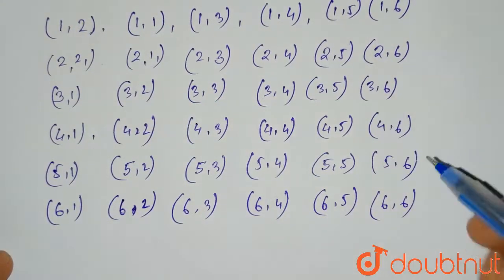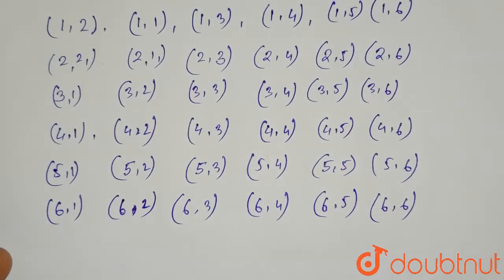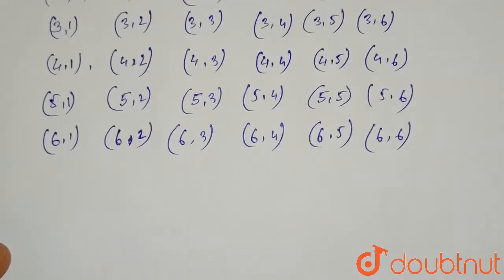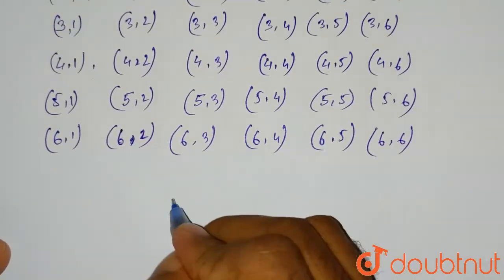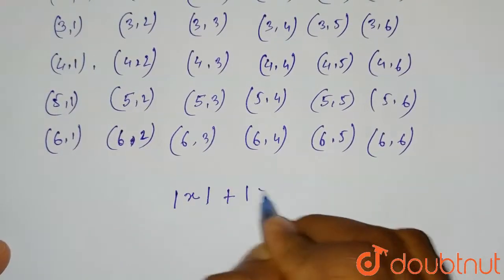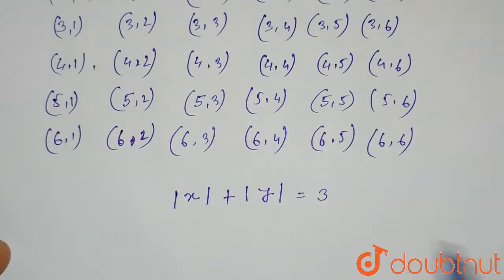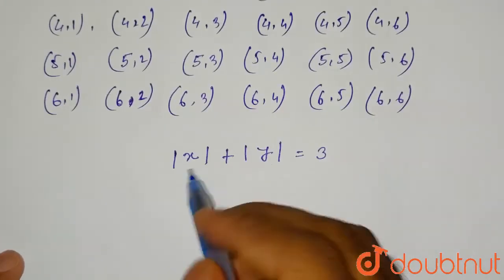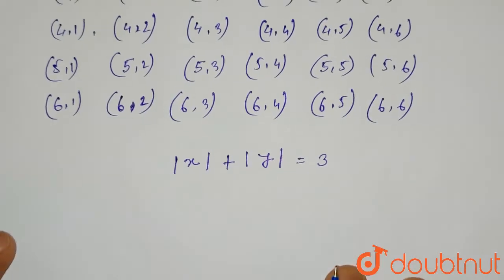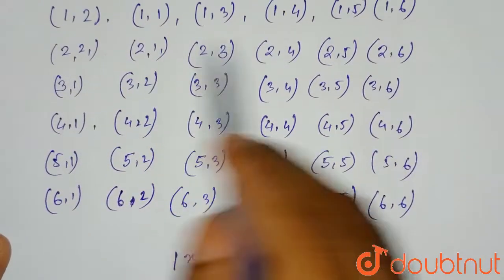So here we will get total 36 outcomes, out of which we have to find the favorable cases which will satisfy the equation |x| + |y| = 3. If we look at this equation, these are the mod values and we are not having any of the negative numbers here. All the numbers are positive.